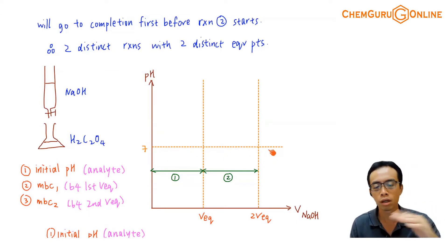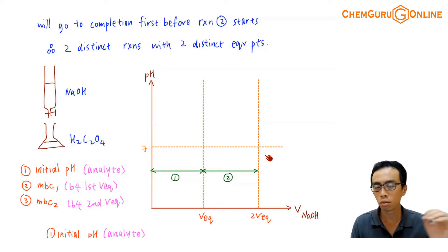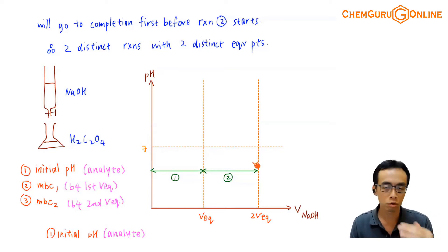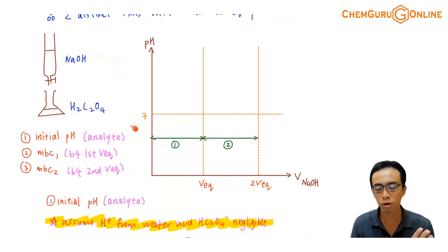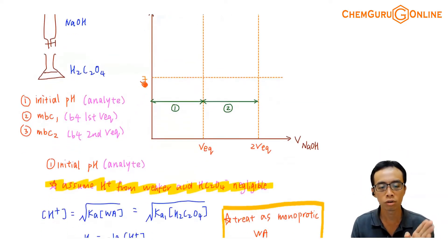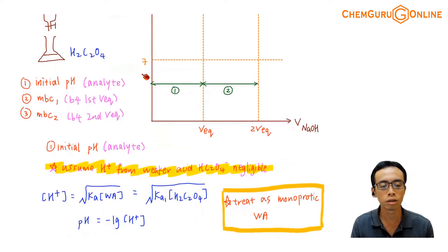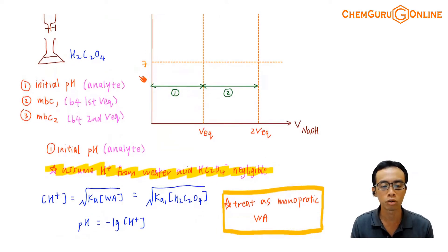Now this pH equals to 7 — usually we will still put it in, but later we will comment on that. So the first point: let us try to consider how do I determine the initial pH of the solution.